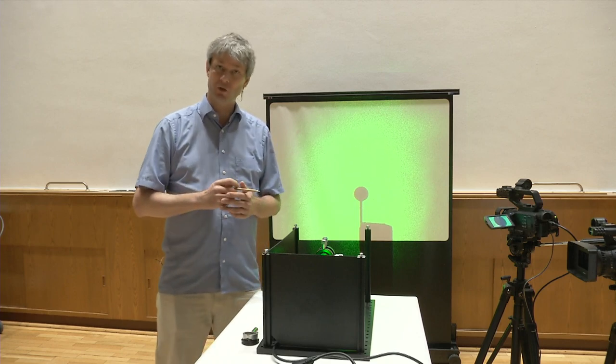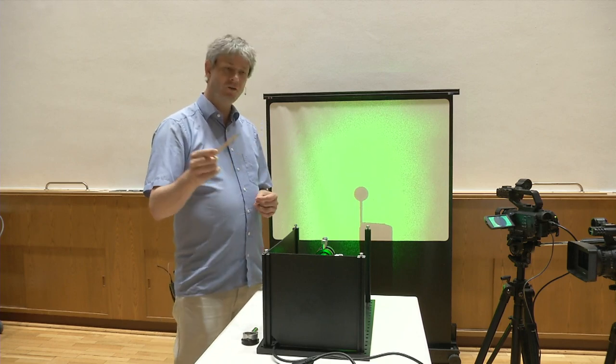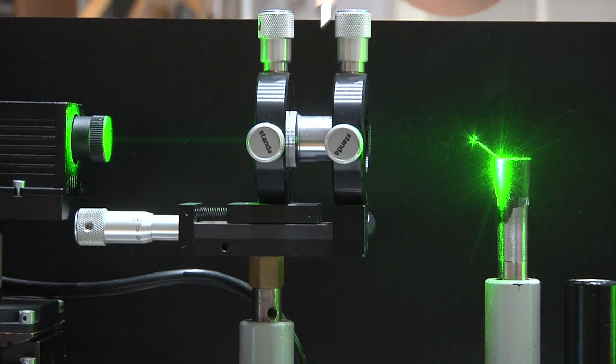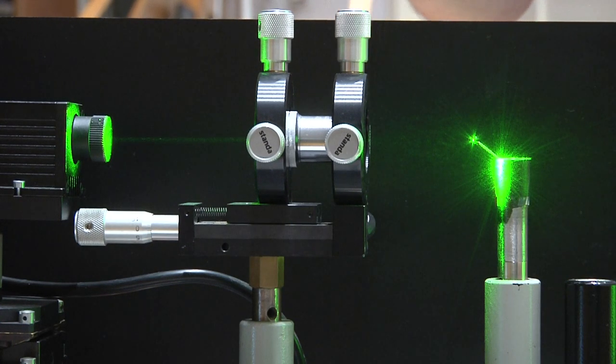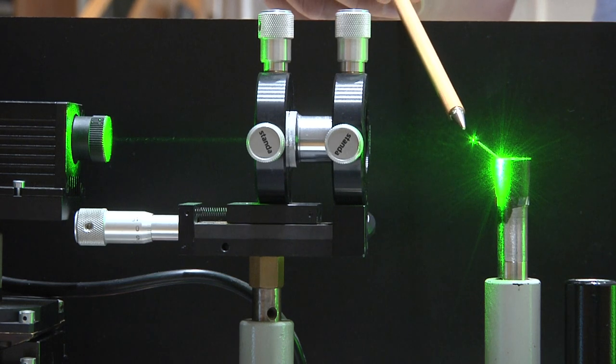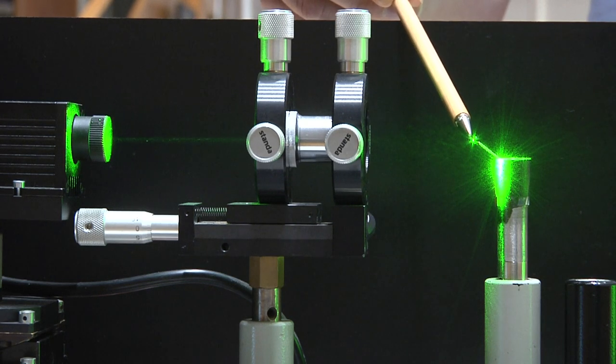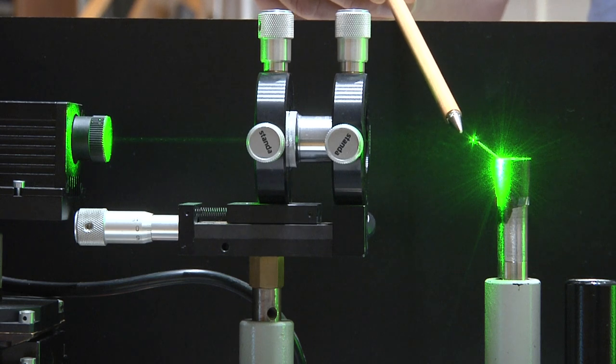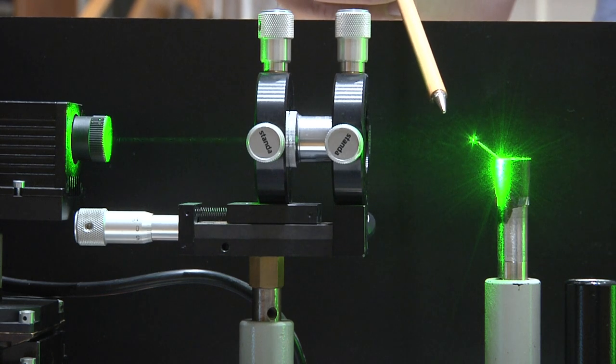This is what this experiment is going to show you. You see here that we have a laser and a beam expander essentially with a little pinhole that generates very good quality coherent light. And then here we have the most important bit, which is a little round object. It is actually just a pin with a nice circular head.